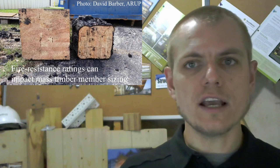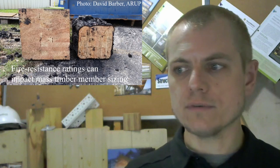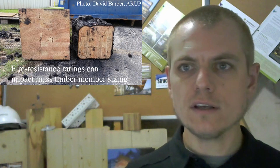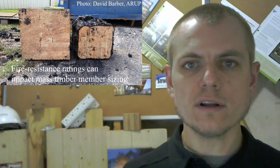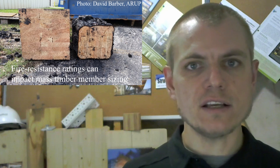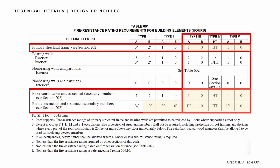For example, if we're looking at construction types 3B, 4, and 5A as options, there are some very significant differences in what we need for fire ratings within those. 3B structure really has zero hourly fire ratings for most interior structural elements.